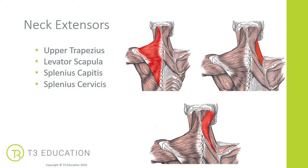There are four main neck extensors: the upper fibers of the trapezius, levator scapula, and the two splenius muscles — splenius capitis and splenius cervicis. In this presentation, we're going to focus particularly on the upper trapezius and the levator scapula.